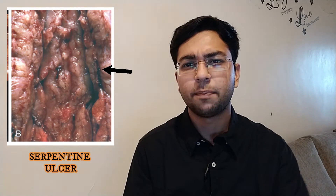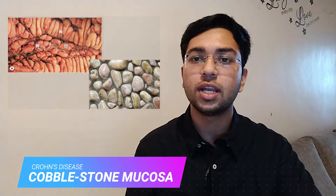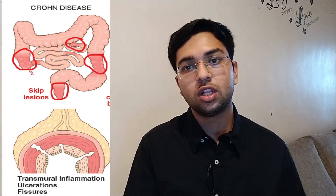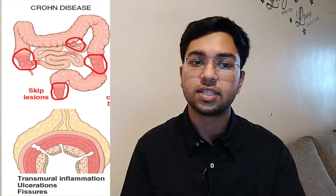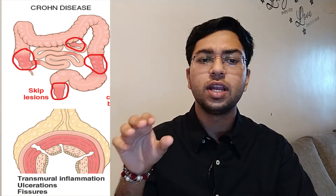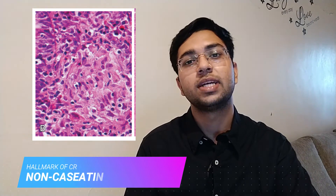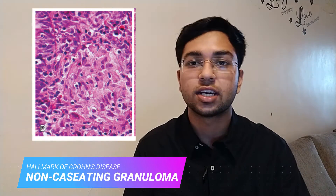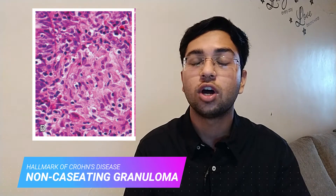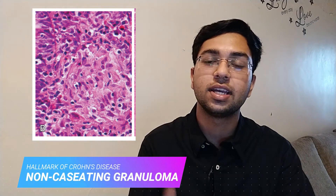Thickened bowel wall leads to narrowing of the lumen, linear ulceration of the mucosa — also known as serpentine ulcers — and then cobblestone mucosa, which is very classical of Crohn's disease. Cobblestone mucosa is submucosal edema with elevation of surviving mucosa. Microscopically, transmural inflammation means all four layers of the intestine are involved. Skip lesions are seen — areas of normal bowel interspersed between diseased bowel. Fissures are seen and the hallmark of Crohn's disease is non-caseating granulomas. Non-caseating means intact nuclei are visible, as seen clearly in this image.